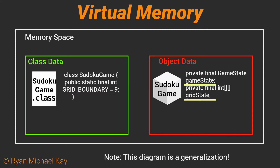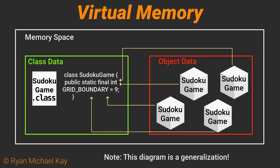Instance variables — the non-static ones — are stored with the object that they are associated with. There are several consequences to the fact that these static variables are stored with the class data instead of with the object, but the most important one has to do with the ratio of objects relative to static variables.